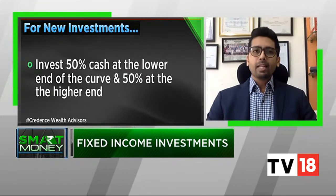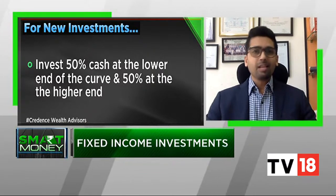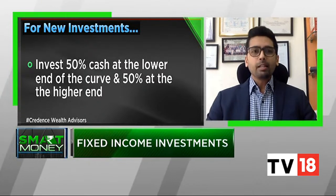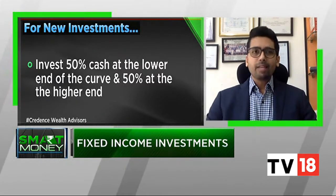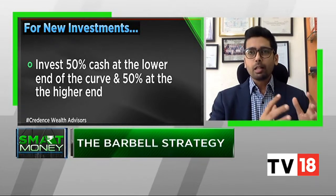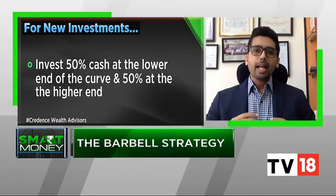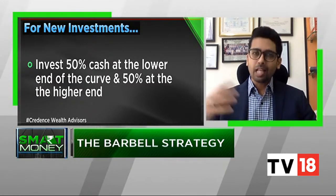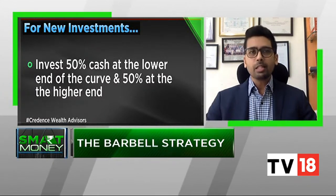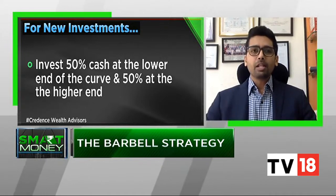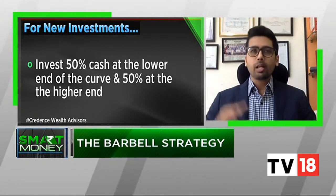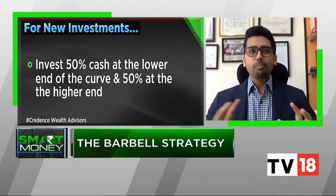If there is somebody who wants to stay invested in fixed income for a longer period in a rising interest rate situation, you typically do something called a barbell. A barbell is a very simple strategy where you put 50 percent of your money at the lower end of the curve — lower maturities — and 50 percent at the higher end of the curve — higher maturities. Historically, every time yields have gone up, this particular strategy over the long term has really worked out well, instead of taking a position only at the lower or higher end of the curve.